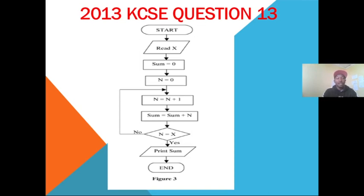This is question 16 and the flowchart reads as follows: we have Start, then Read X, then Sum equals zero and N equals zero. After initializing sum to zero and N to zero, N equals N plus 1 — so for the first loop N will be equal to 1, because 0 plus 1 is 1. Then Sum equals Sum plus N; since Sum is 0 and N is 1, Sum becomes 1.